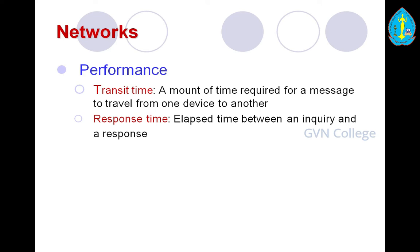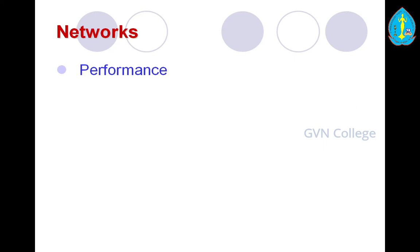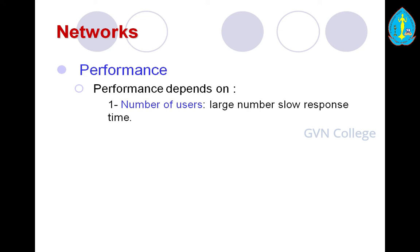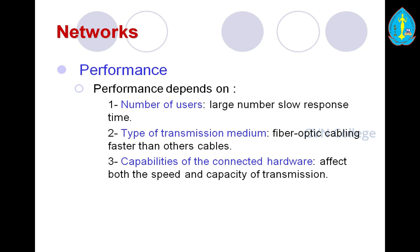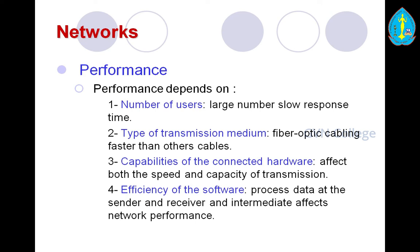Performance depends on: number of users — a large number of users means slow response time; type of transmission media — fiber optic cabling is faster than other cables; capability of the connected hardware — affecting both speed and capacity of transmissions; and efficiency of the software processing data at the sender, receiver, and intermediate network nodes.